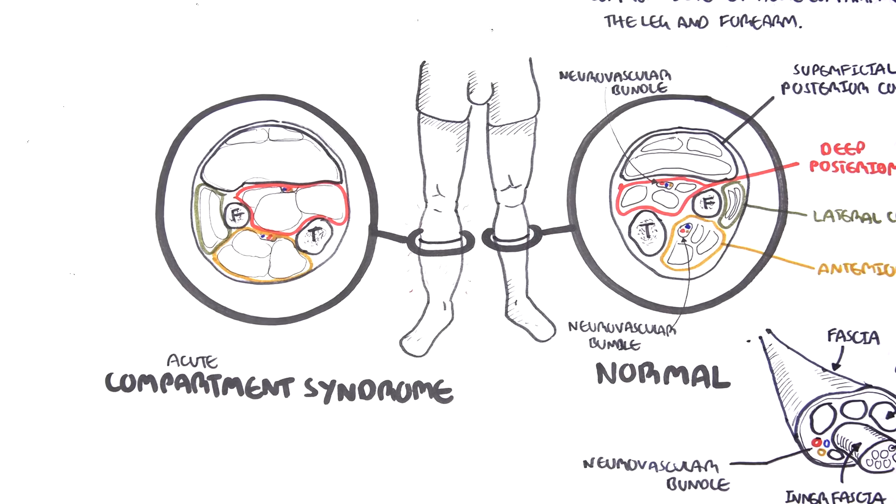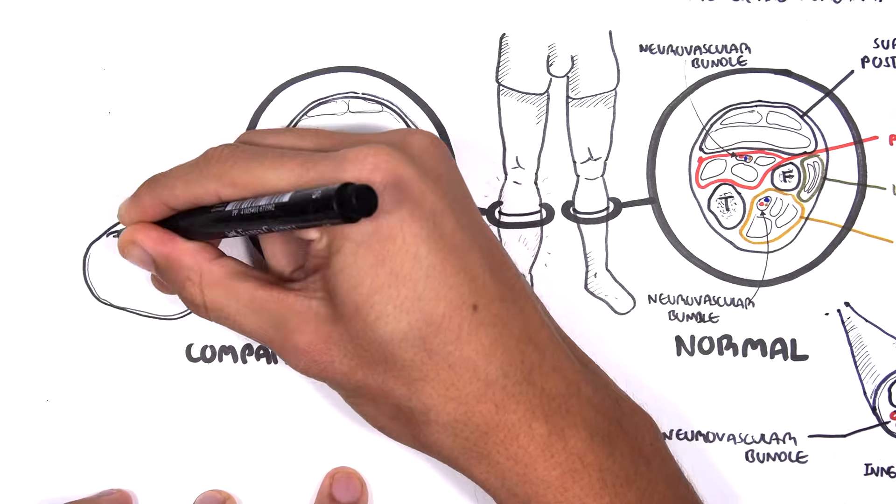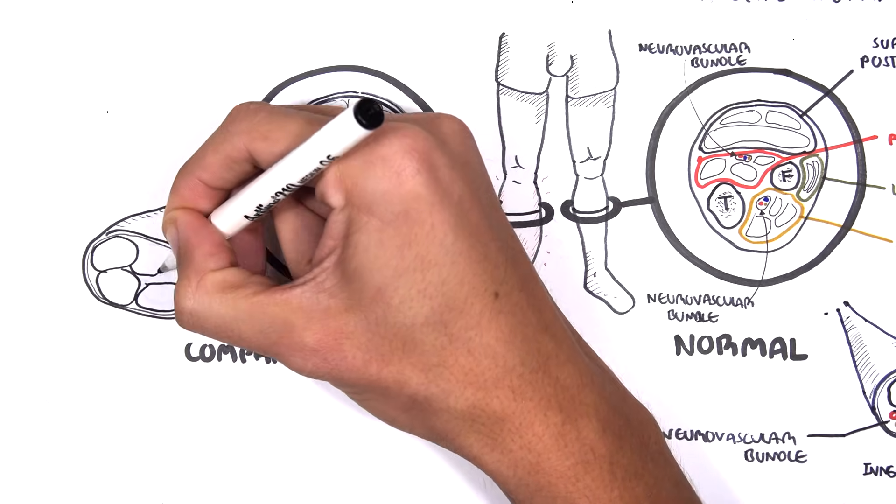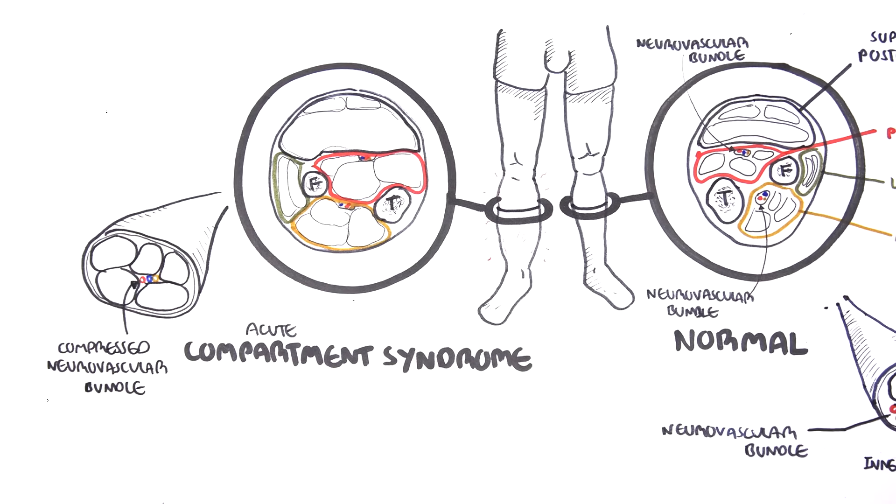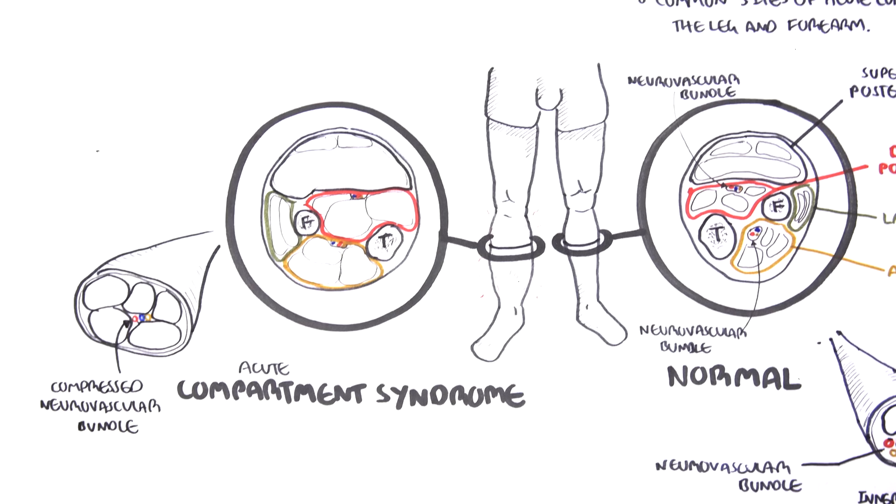This increase in pressure that we see in compartment syndrome leads to compression of the neurovascular bundles, which further increases the pressure and can lead to devastating consequences if not corrected.